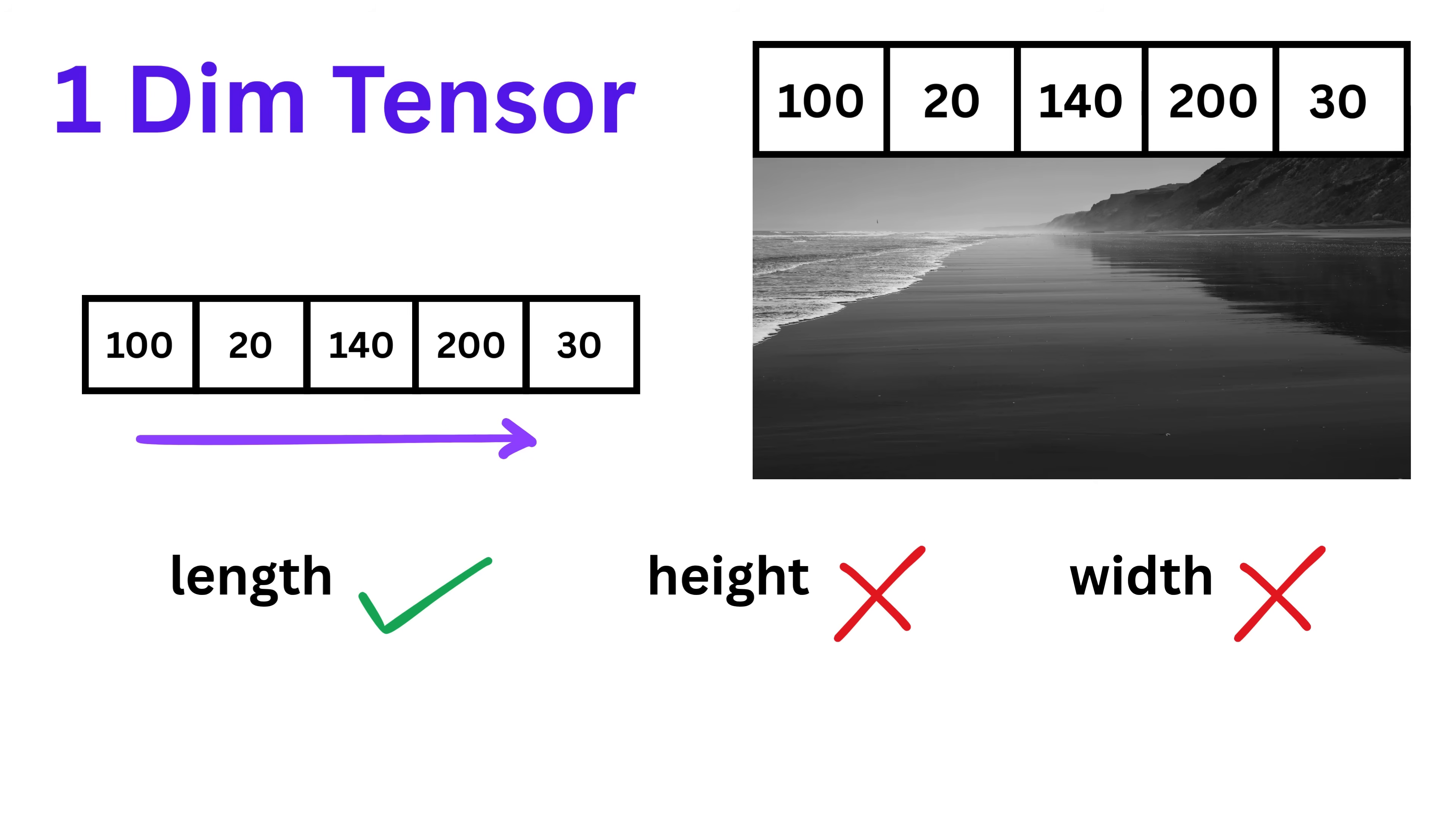Similarly, even a single vertical strip, a column of pixels, would still be a one-dimensional tensor, since it's just a list of numbers in one direction. So, a one-dimensional tensor is like a row or column of pixel values in grayscale. It holds one dimension of data. We also call a one-dimensional tensor a vector.